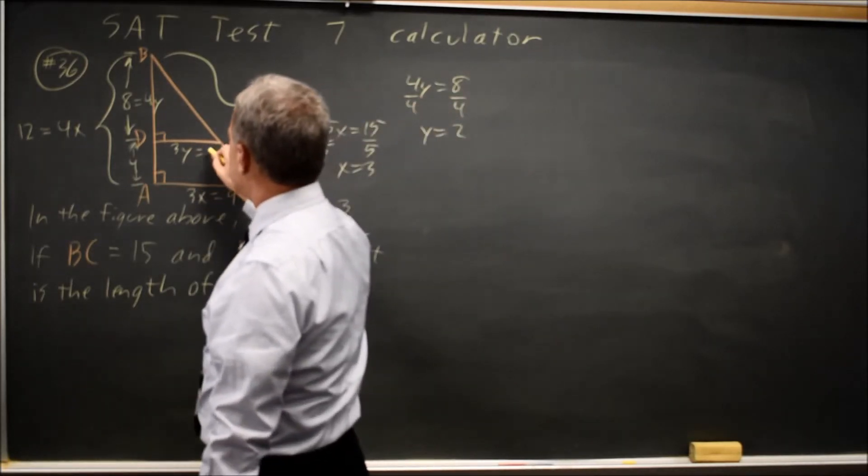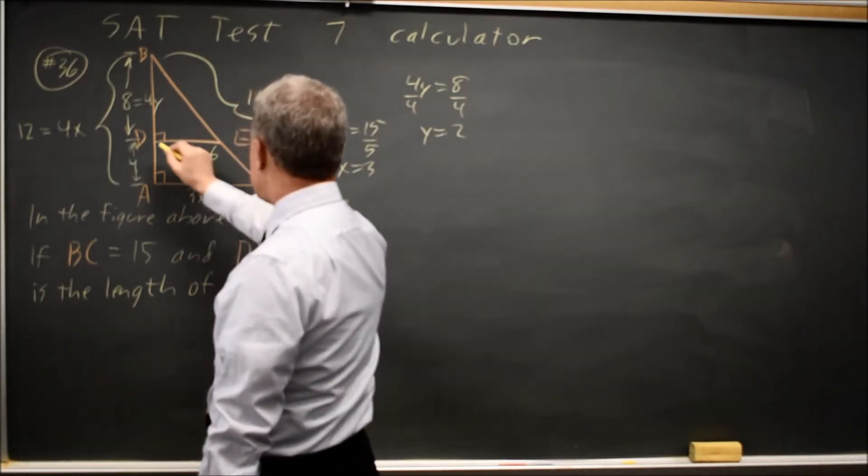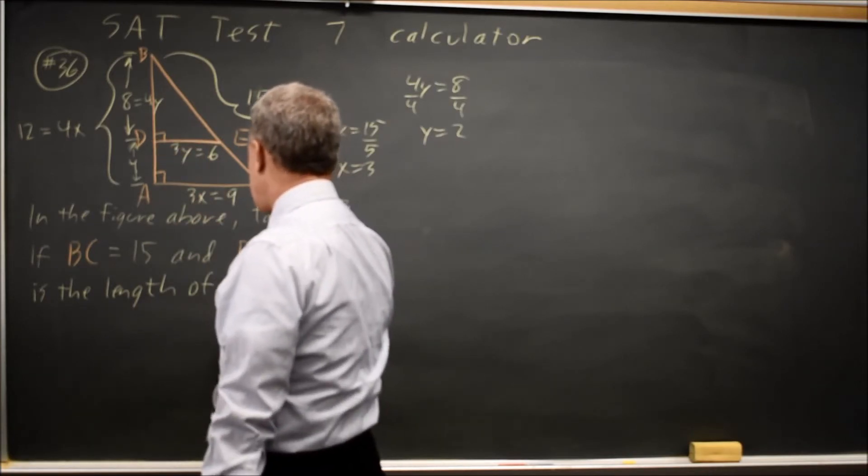So 3Y equals 3 times 2 equals 6, and they're asking for DE, which I just found is length 6.